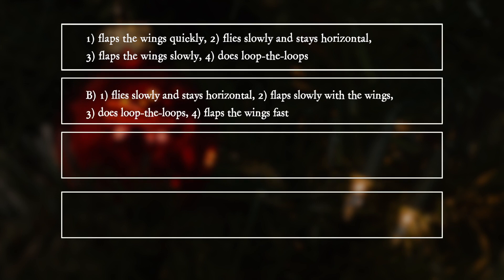B: 1 flies slowly and stays horizontal, 2 flaps slowly with the wings, 3 does loop-the-loops, 4 flaps the wings fast.